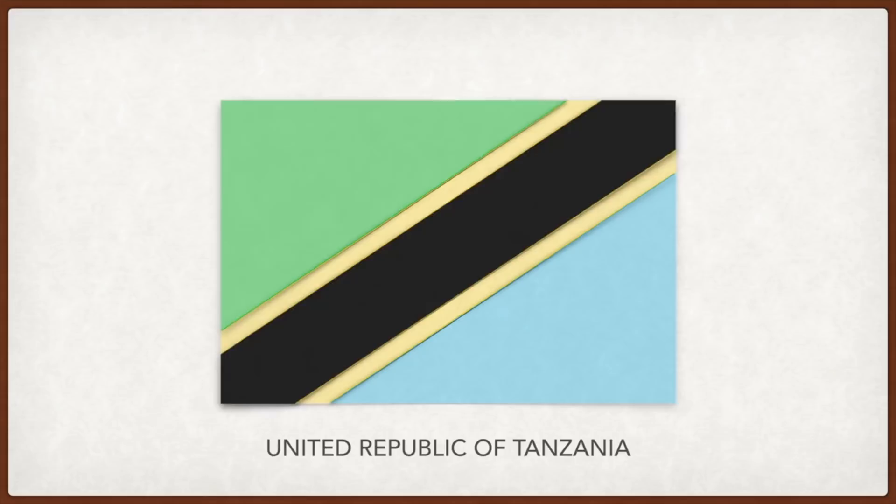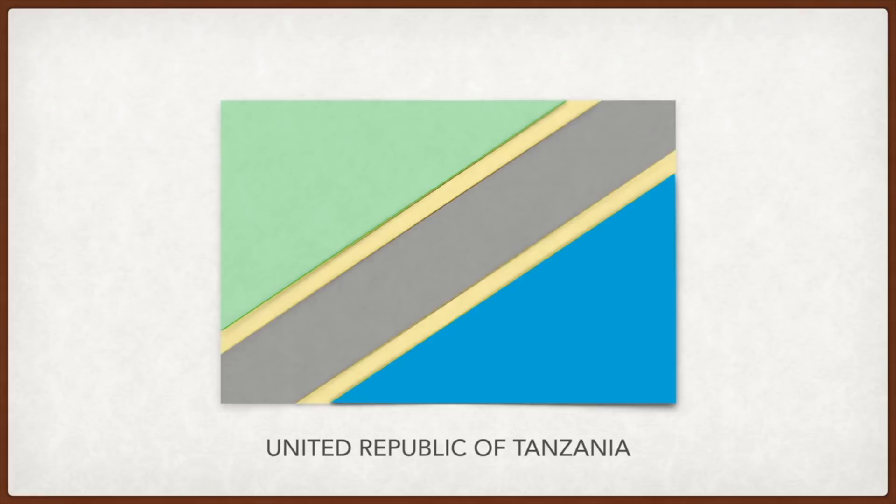Tanzania: green is for the land, black is for the Swahili people — the natives of Tanzania — and blue is for the Indian Ocean, which it borders. The yellow stripe represents the country's mineral wealth.